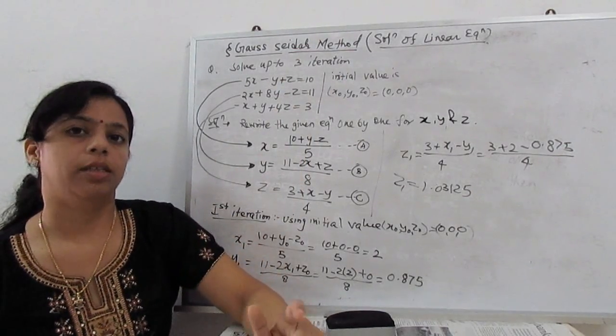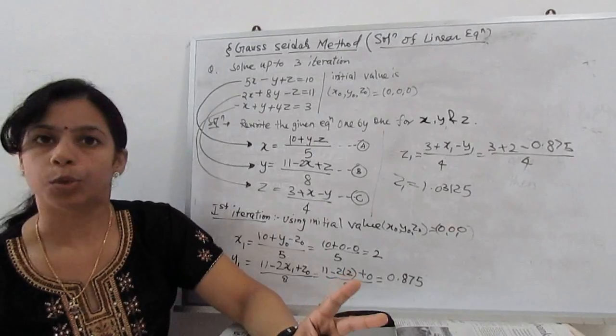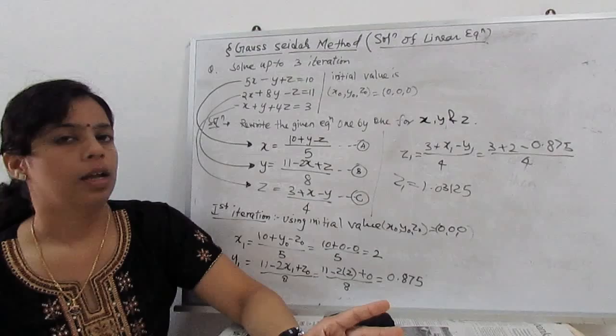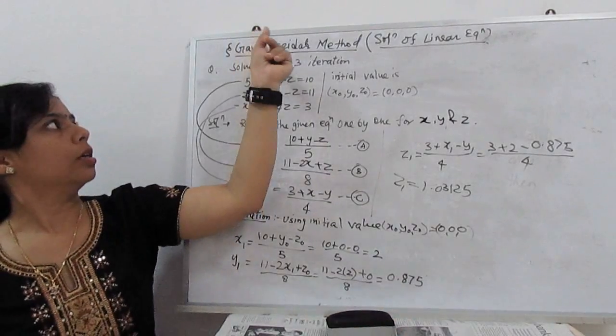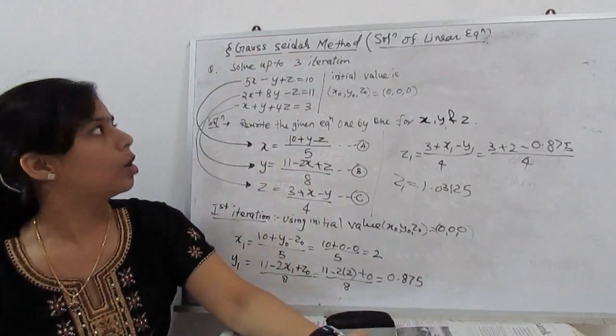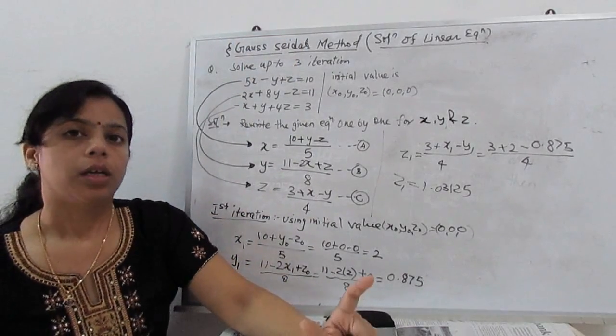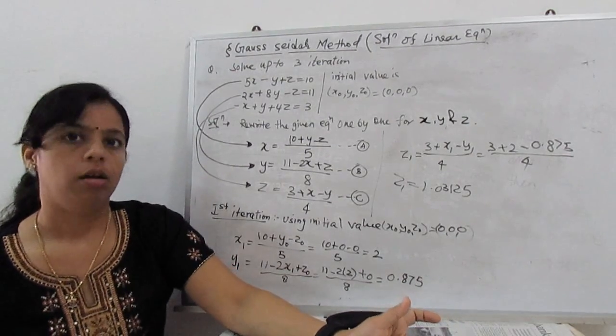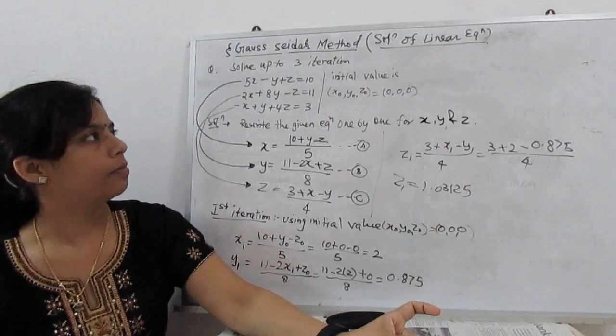Before we read some direct methods, now we go for two indirect methods. In my previous method, we learned Jacobi iteration method, now Gauss-Seidel method. In Gauss-Seidel method, it's a little bit similar to Jacobi iteration, but there is a difference. What is the difference? I will show you with the help of one example.